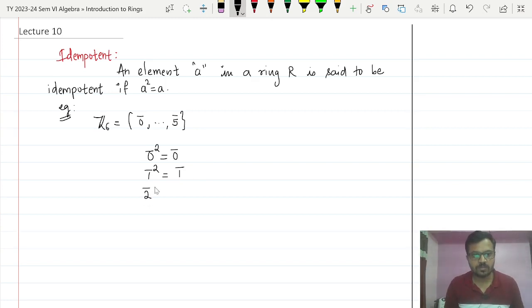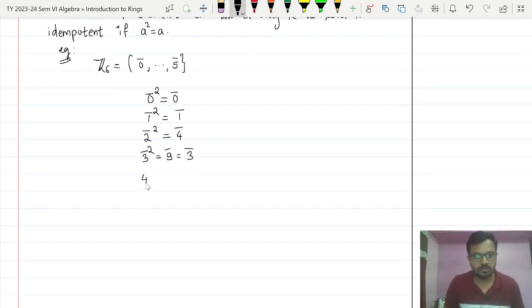Next, what is 2 bar square? It is 4 bar. What is 3 bar square? It is 9 bar. But what is 9 bar in Z6? 3 bar. Next, 4 bar square is 16 bar. What is 16 bar modulo 6? It is 4 bar, right?